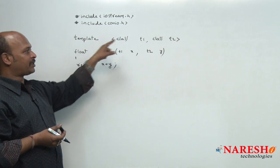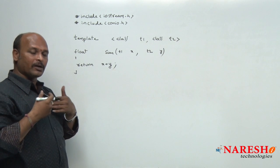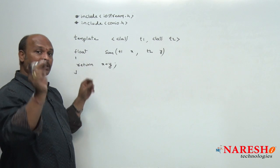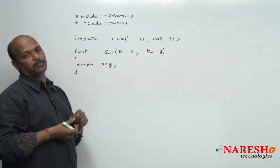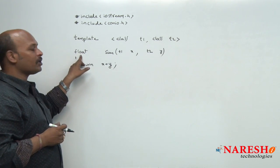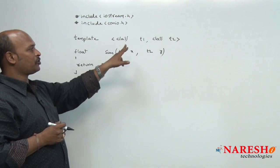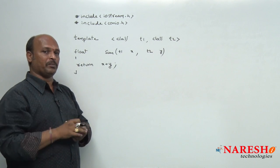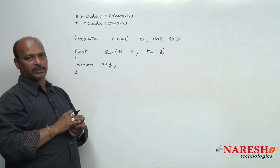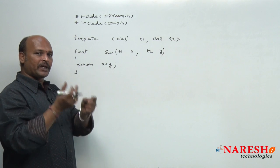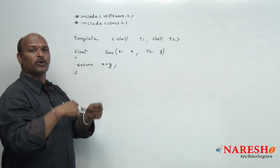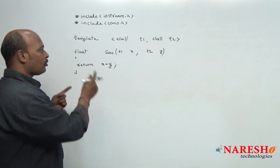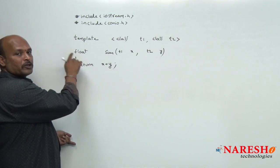An important point: do not use T1 or T2 as the return type here, because it depends on what the user sends. If you use T1 and the user sends float as T2, there will be a problem. That is why we use float as the explicit return type. In the last program we used only one type because same-type data was sent, so there was no issue. But here, with different data types, we use float to cover all cases.